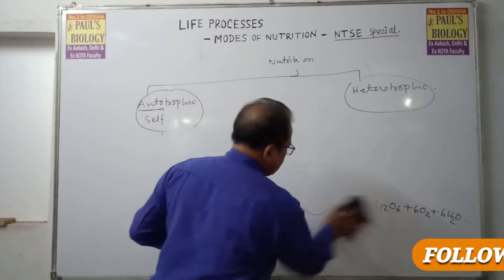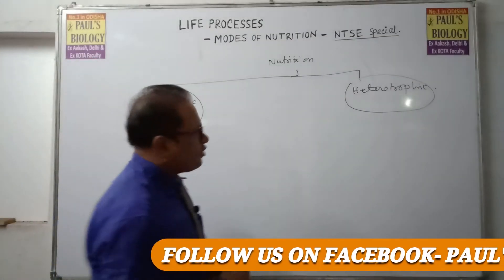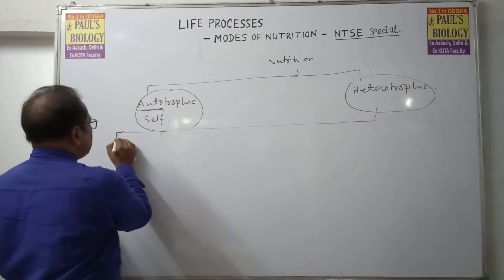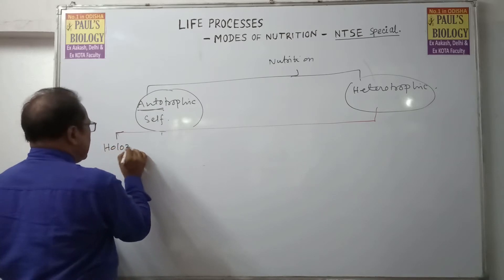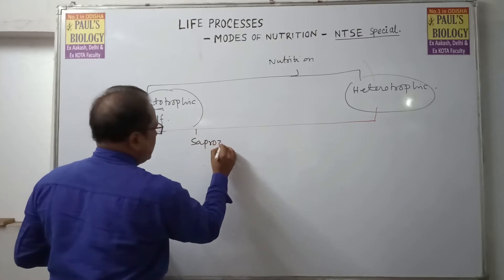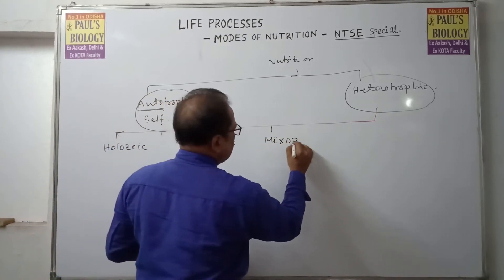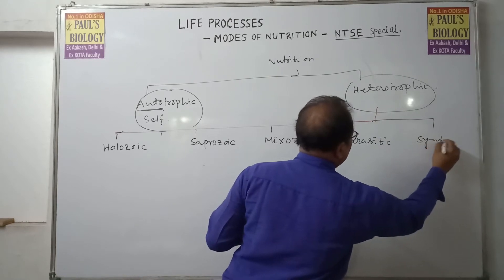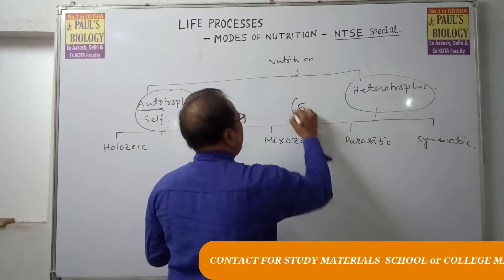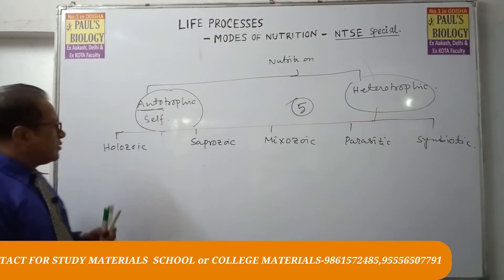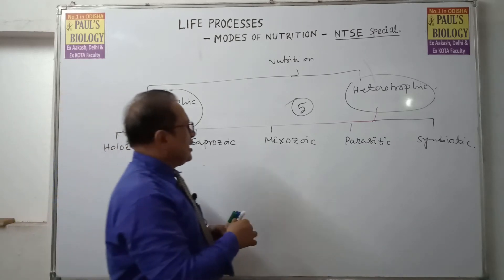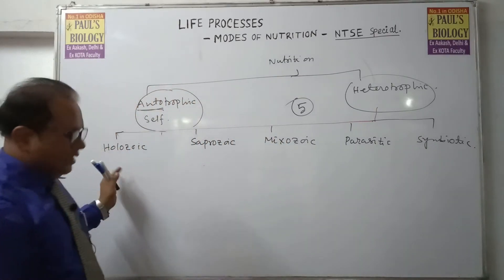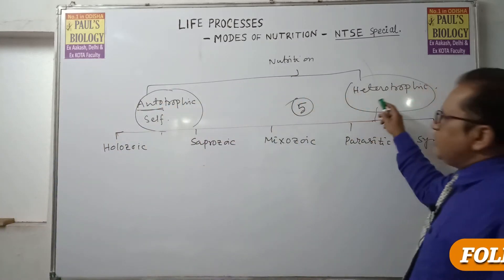Now we are going to discuss heterotrophs. Heterotrophs are of five types: first is holozoic, next is saprozoic, next is mixozoic, next is parasitic, and the last one is symbiotic. So total five types of heterotrophic nutrition.